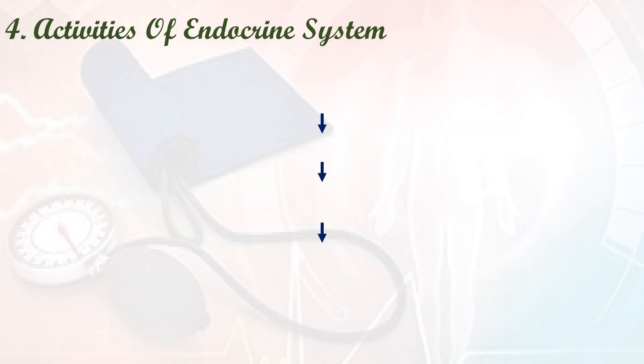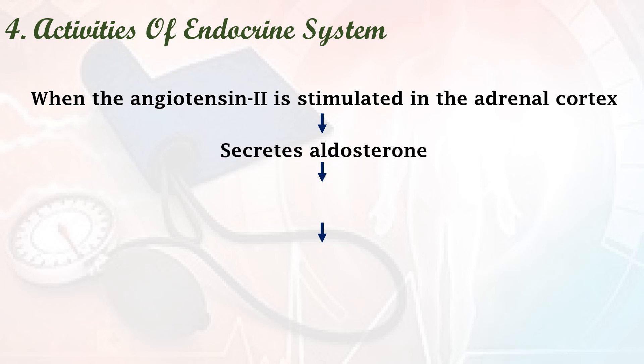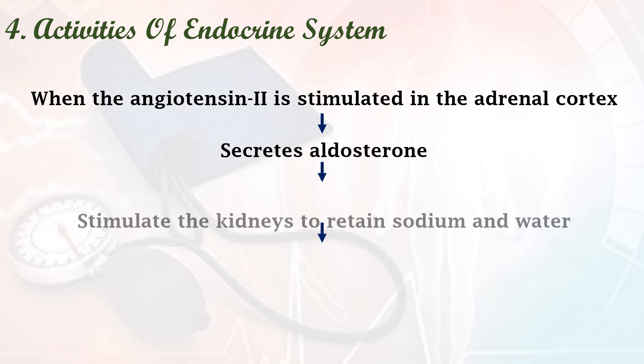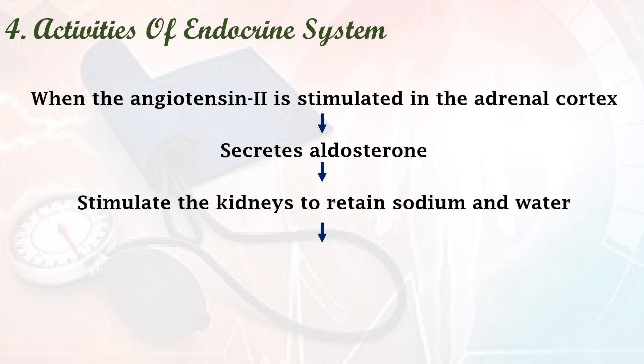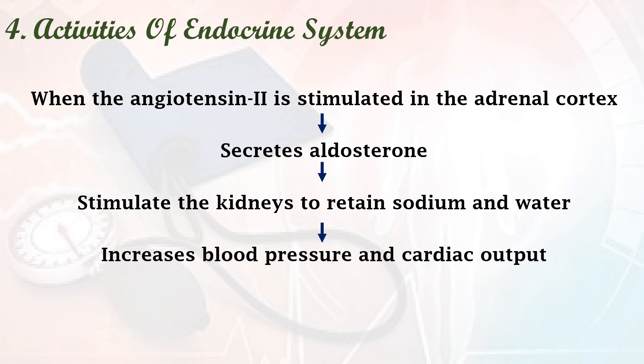The fourth mechanism is activities of the endocrine system. When angiotensin 2 stimulates the adrenal cortex, it secretes aldosterone. This aldosterone stimulates the kidney to retain sodium and water, thereby increasing blood pressure and cardiac output.